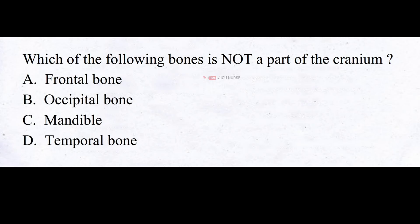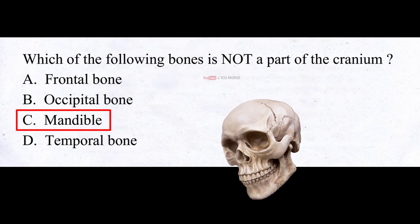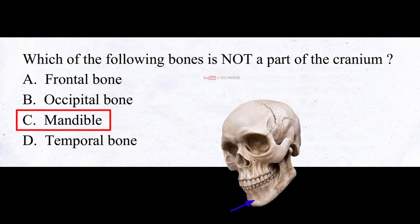Which of the following bones is not a part of the cranium? A. Frontal bone, B. Occipital bone, C. Mandible, D. Temporal bone. And the correct answer is C. Mandible. The mandible is not a part of the cranium. The cranium is the bony structure that encloses and protects the brain, and it includes the skull bones that form the forehead, the top and sides of the skull, and the back of the head. The mandible, also known as the jaw bone, is a separate bone located in the lower part of the skull and forms the lower jaw.